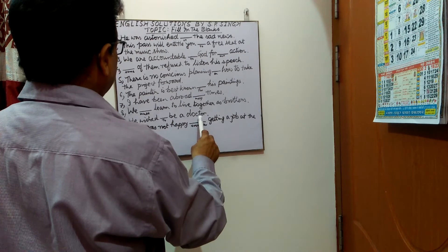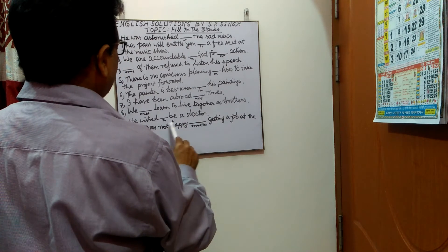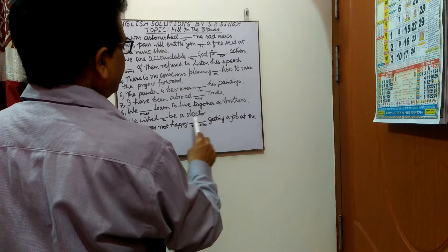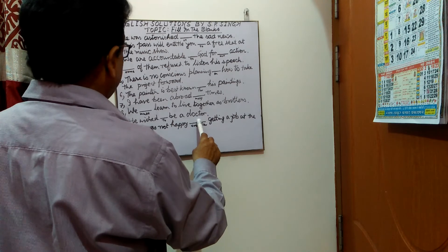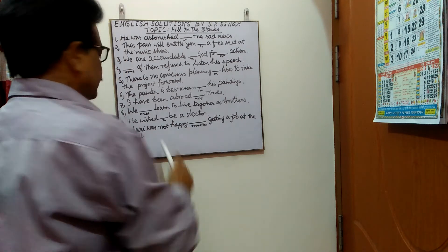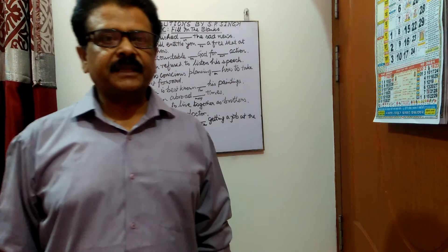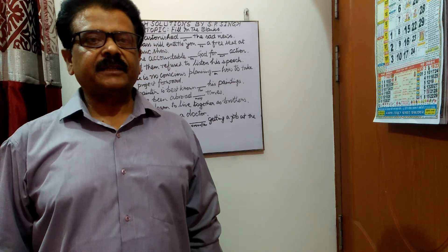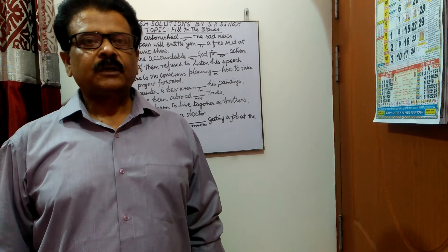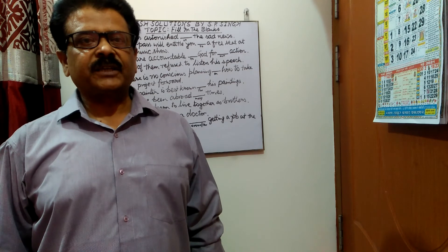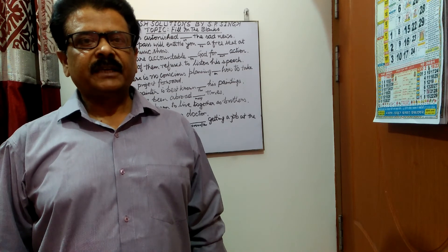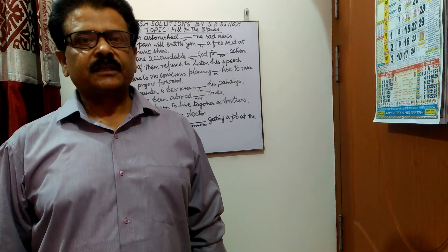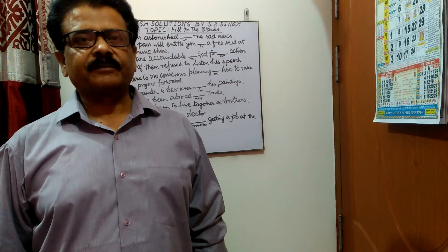Last sentence: 'Harry was not happy ___ getting a job at the mill.' In the blank you have to put 'even after'. The sentence will be: Harry was not happy even after getting a job at the mill. So 10 sentences and their fill-ups are done in this video. Please like, share and subscribe — English Solutions.